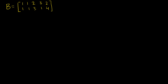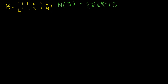Let's say I have this matrix B here, and I want to know what the null space of B is. We've done this multiple times, but just as a review, the null space of B is all the vectors x that are members of R5 where matrix B times any of these vectors x is equal to 0. That's the definition of the null space.